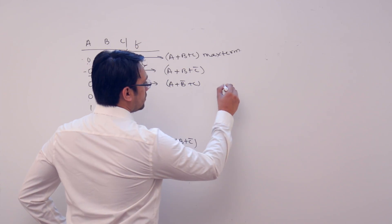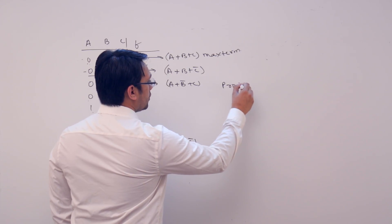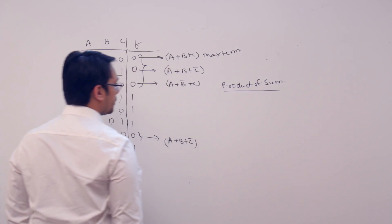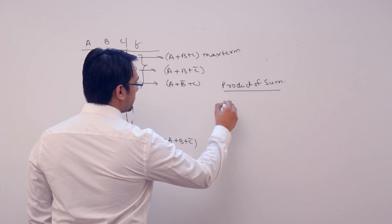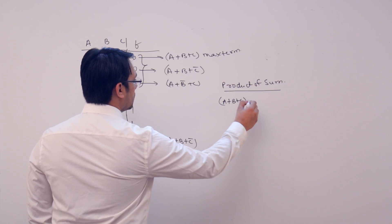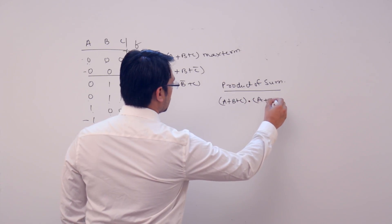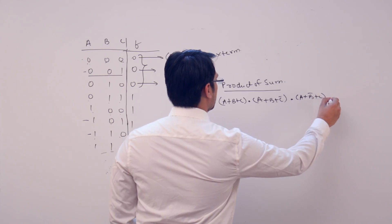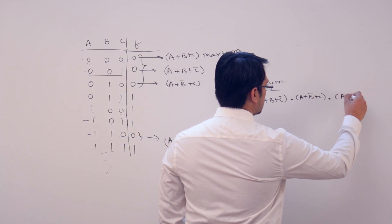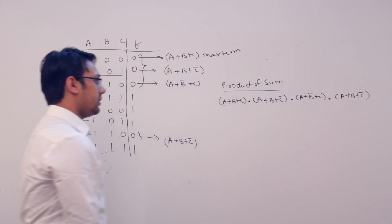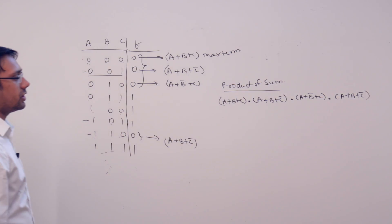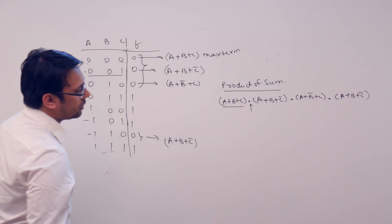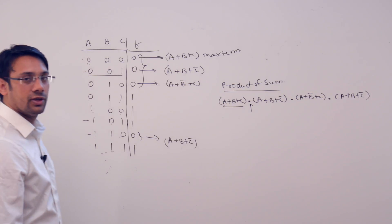Next is the Product of Sum forms. What is the product of sum? I can write it like this: (a+b+c) · (a+b+c complement) · (a+b complement+c) · (a+b+c complement). This is the product of sum — that means we are doing product of sum expressions.